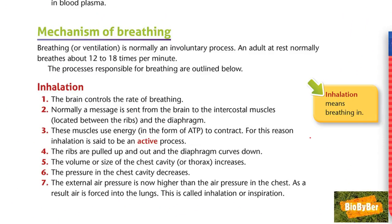Reading chapter 30, human breathing, continued, picking it up at page 341, at the heading: the mechanism of breathing. Breathing, or ventilation — in hospital people are often put on ventilators to help them breathe — is normally an involuntary process, meaning it's under your unconscious control. An adult at rest normally breathes about 12 to 18 times per minute. This will vary from person to person. In the exam, remember you must describe both breathing in and breathing out.